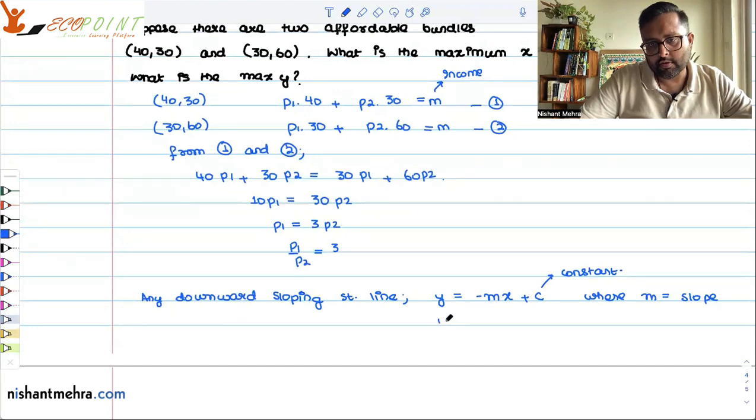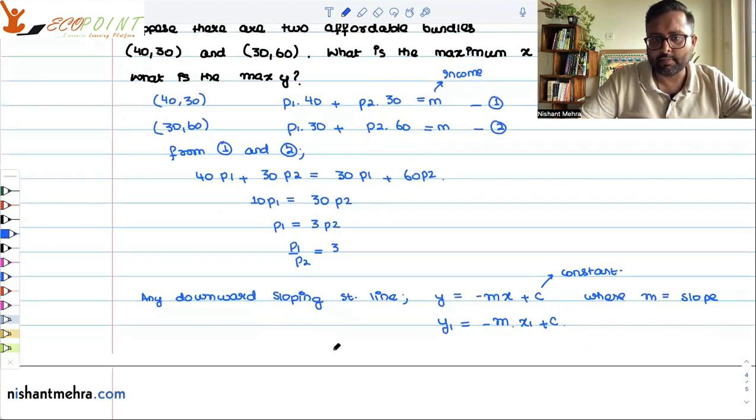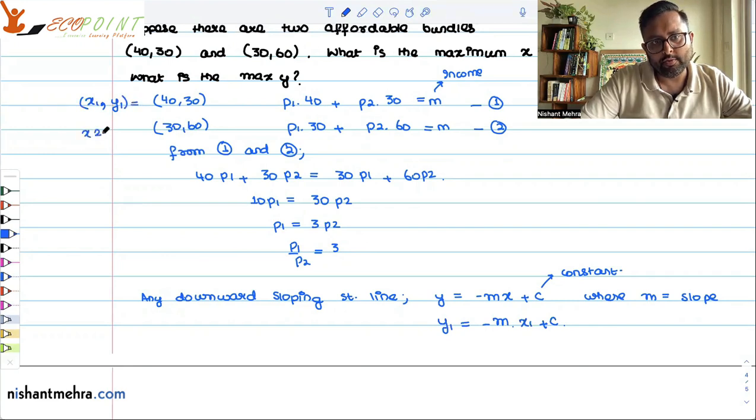So you have y1 equals minus m times x1 plus c. This is what x1, y1 is. This is what x2, y2 is.